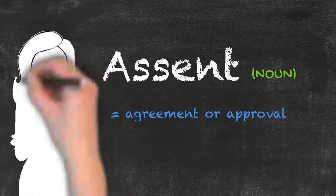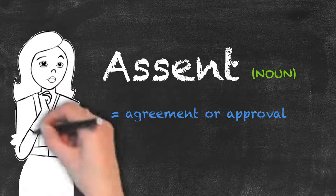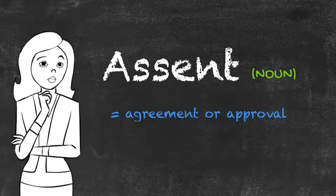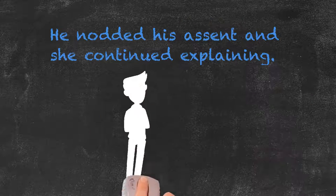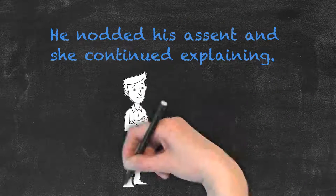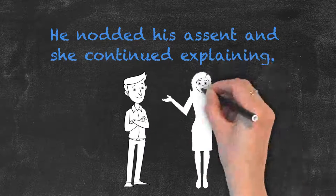Assent describes an agreement or an approval. So we could say, he nodded his assent and she continued explaining.